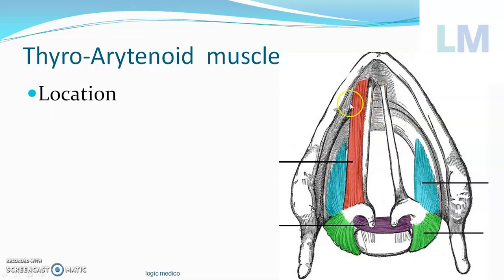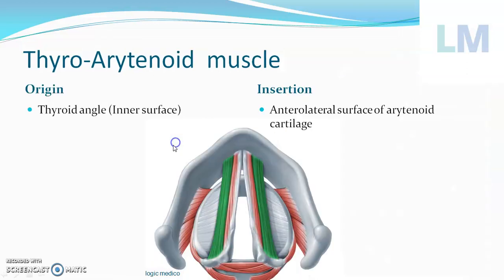That is a mucous membrane — if the mucous membrane is shown here you can't see the muscle, so it is being removed so that you can see the location: within the thyroid cartilage, within the vocal folds. So what is the origin of this muscle and what is the insertion of this muscle?